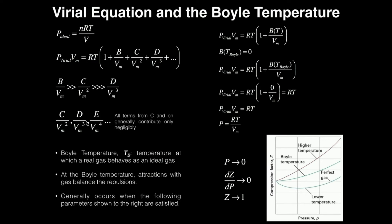But for this derivation, we're going to throw out everything after the B term — so throw out C, D, E, and so on. If we get rid of all those terms, we should have the pressure times the molar volume equals RT times one plus B over the molar volume.